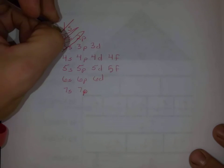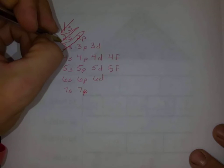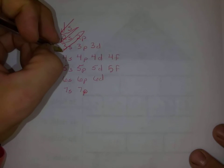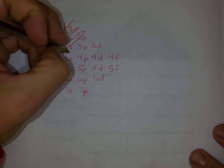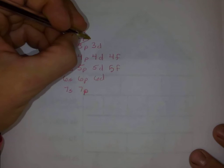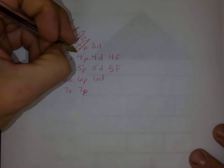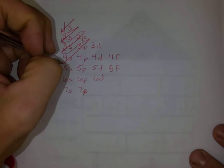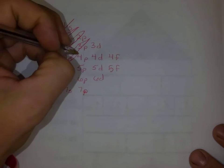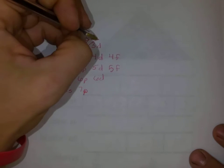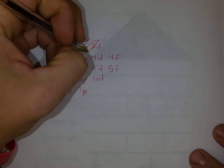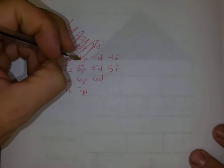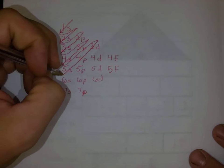I'm going to add some extra arrows on there so that we know the direction. Once we hit the 3s, then we're going to make our loop back up here and go to the 3p, and then the 4s. And then we'll make our loop back up here, and then we'll do our 3d, and then our 4p, and then our 5s.